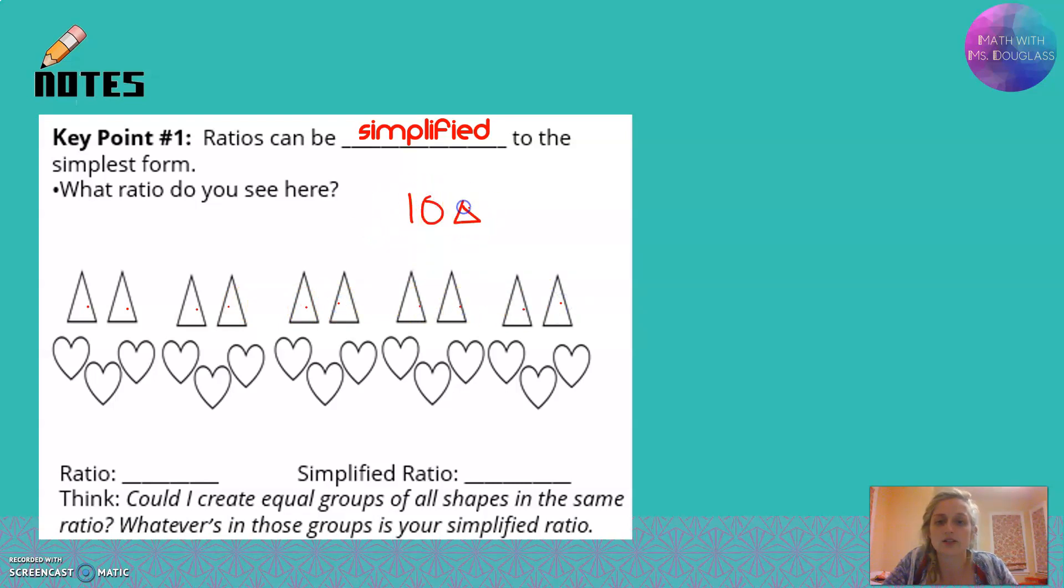10 triangles to every 3, 6, 9, 12, 15 hearts. That's our ratio. But oh no, the question does not have that listed as an answer choice because it asked us for the simplest form of our ratio.